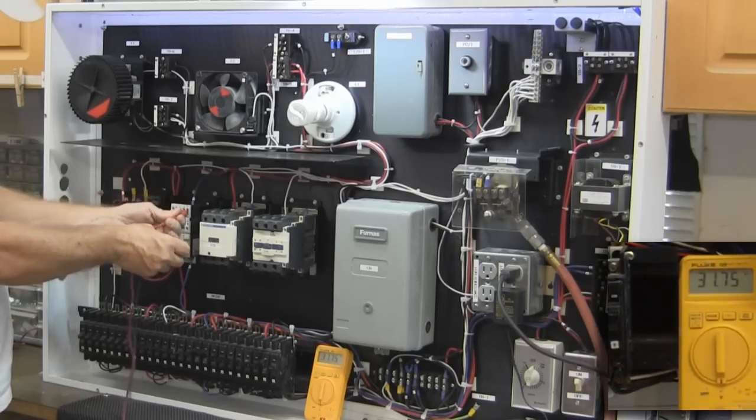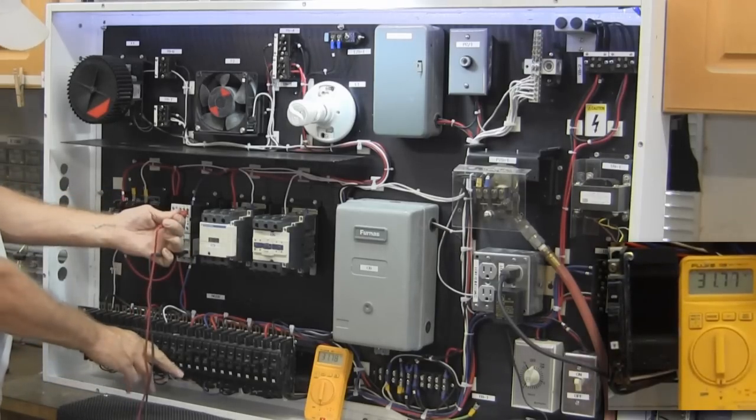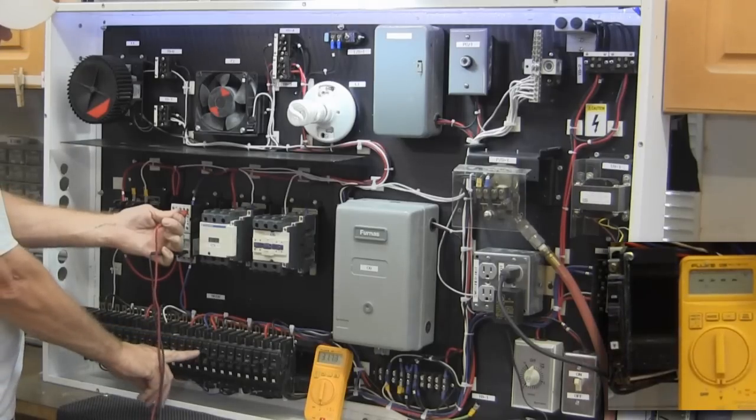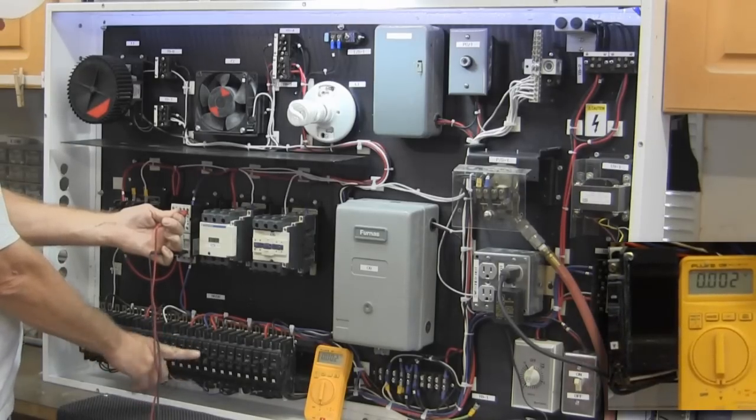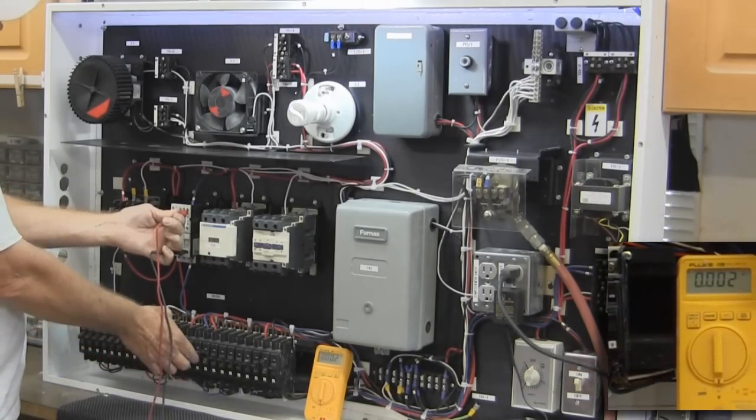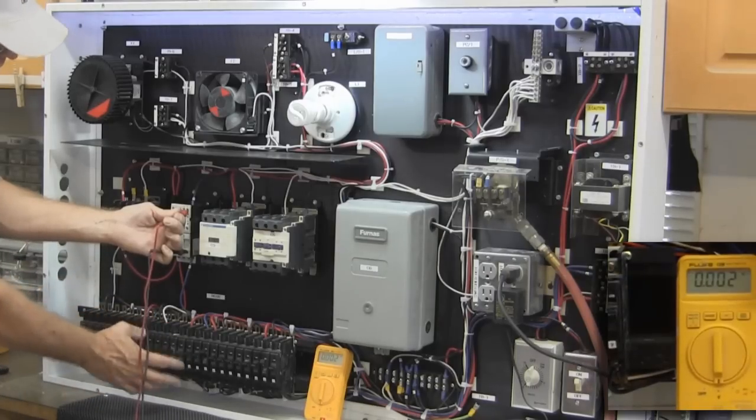So if I turn off P, I don't have any voltage going in there because it's going through this switch.